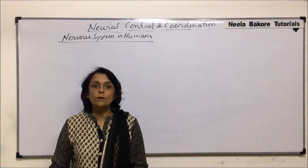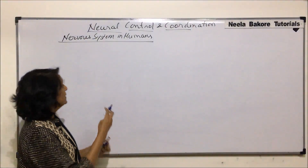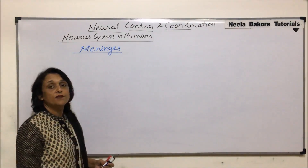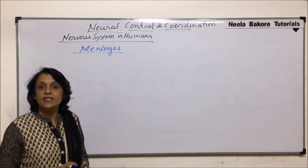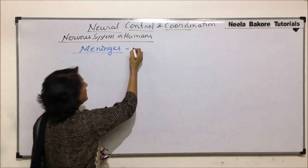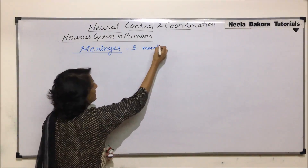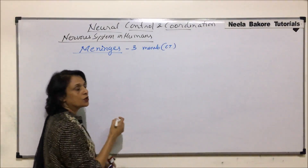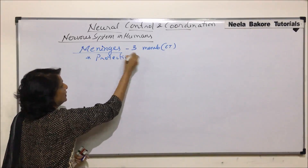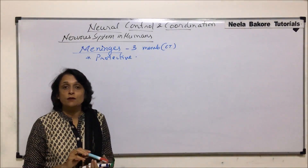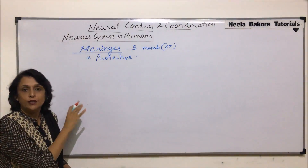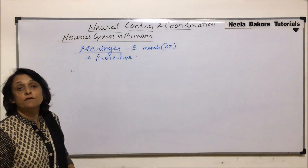In this video we'll talk about meninges. These meninges are the connective tissue membranes which protect the central nervous system. In human beings there are three membranes and these membranes are made up of various types of connective tissue and their nature is protective.